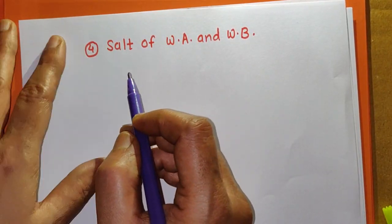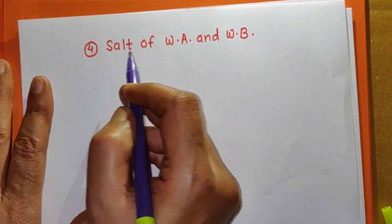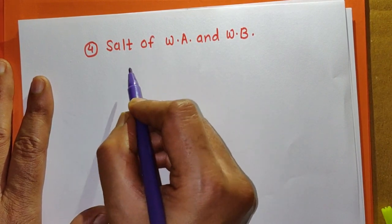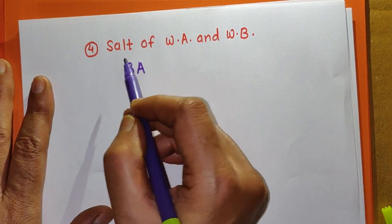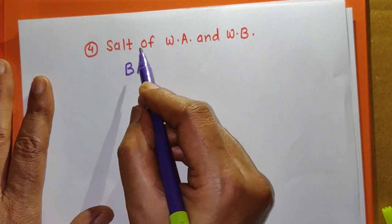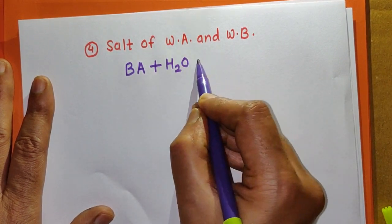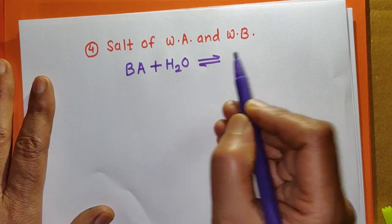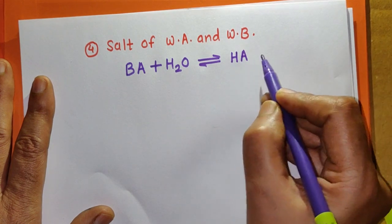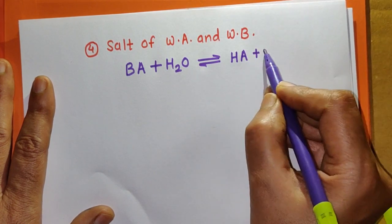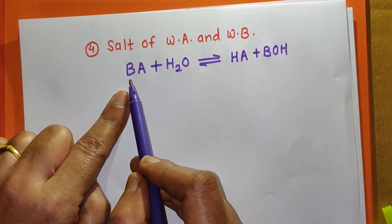The last type of salt is the salt of weak acid and weak base. In general, we represent this salt as BA, where HA is a weak acid and BOH is a weak base. When BA reacts with water, it gives weak acid HA and weak base BOH.